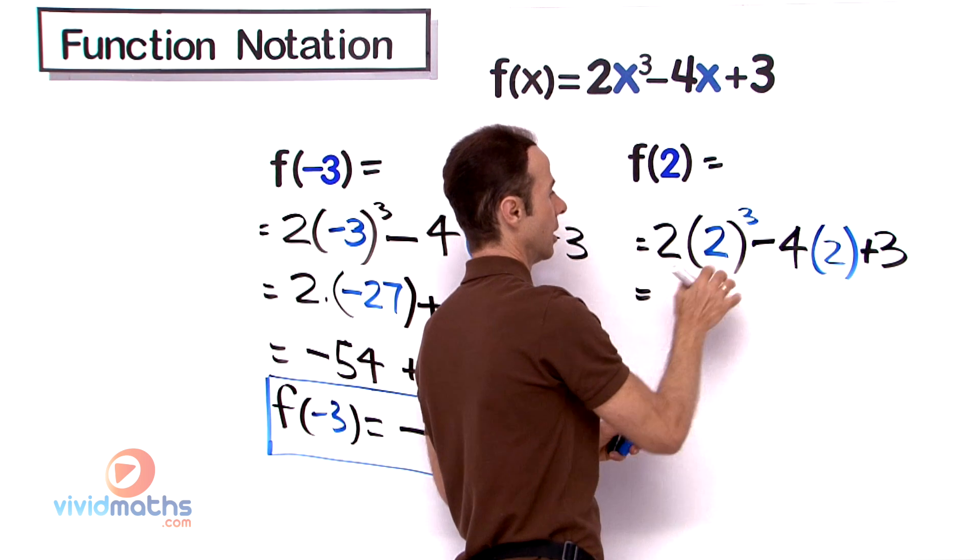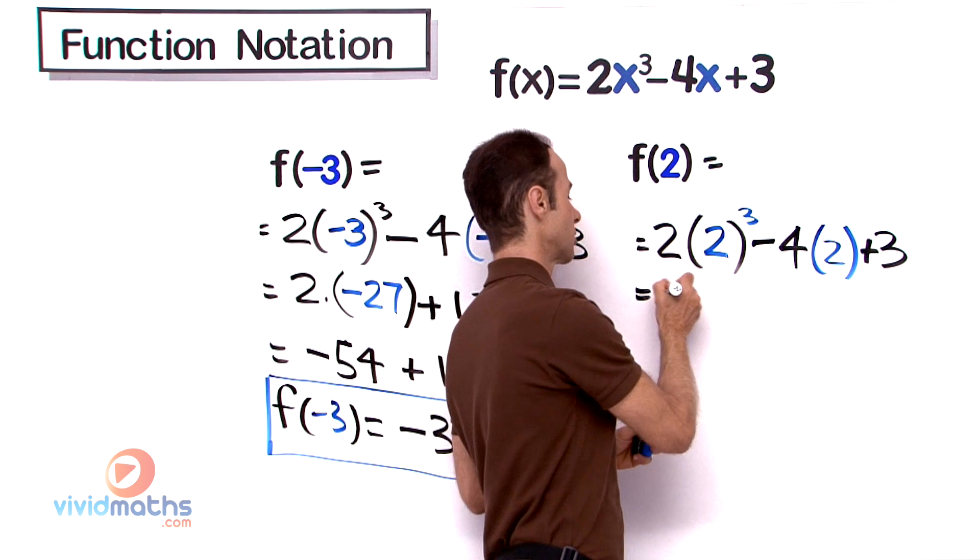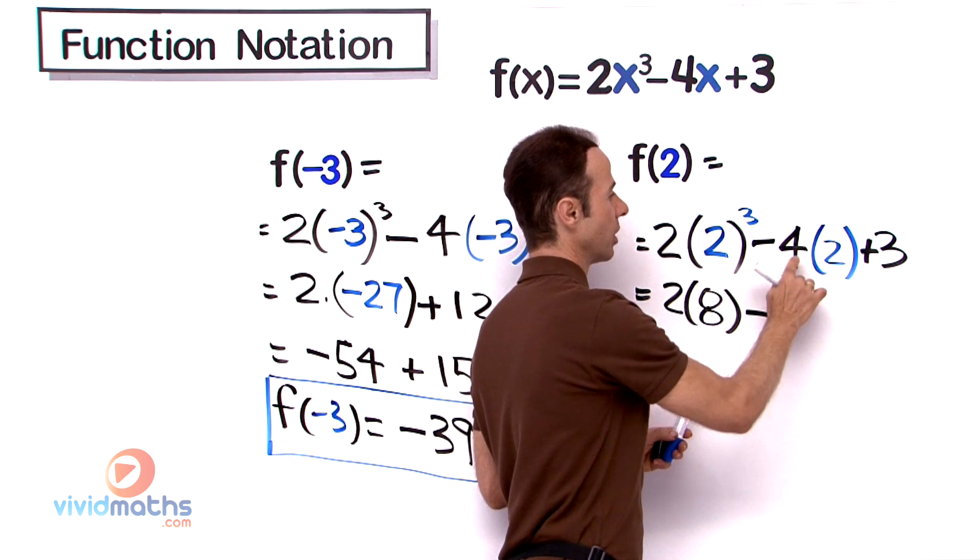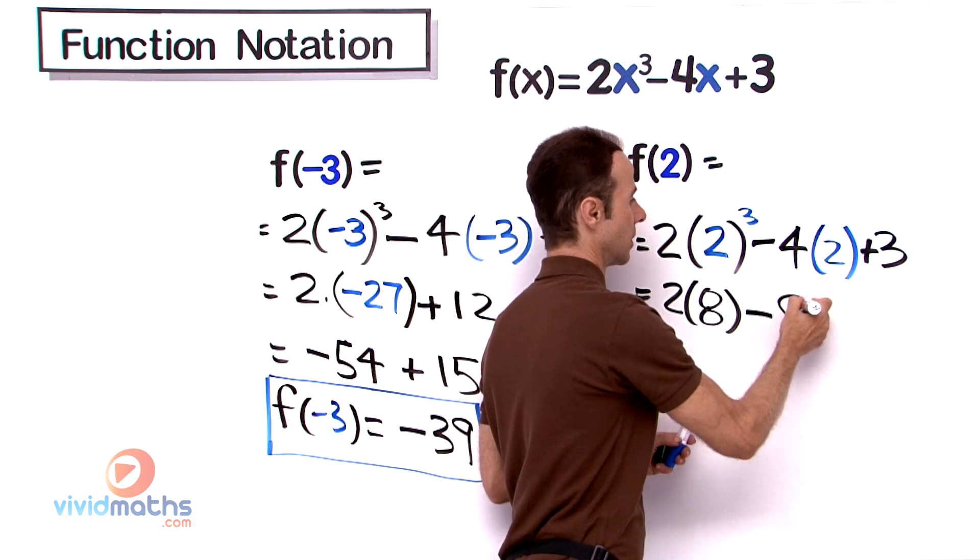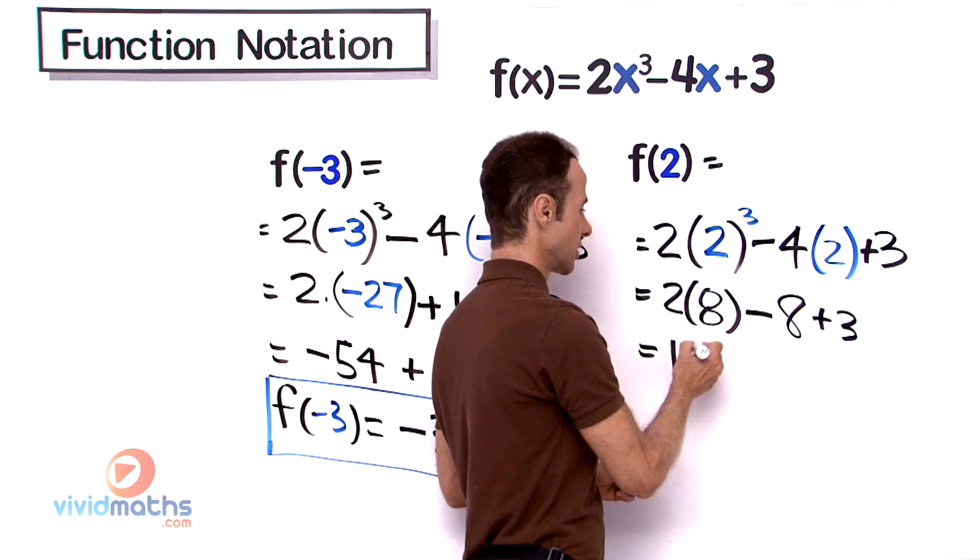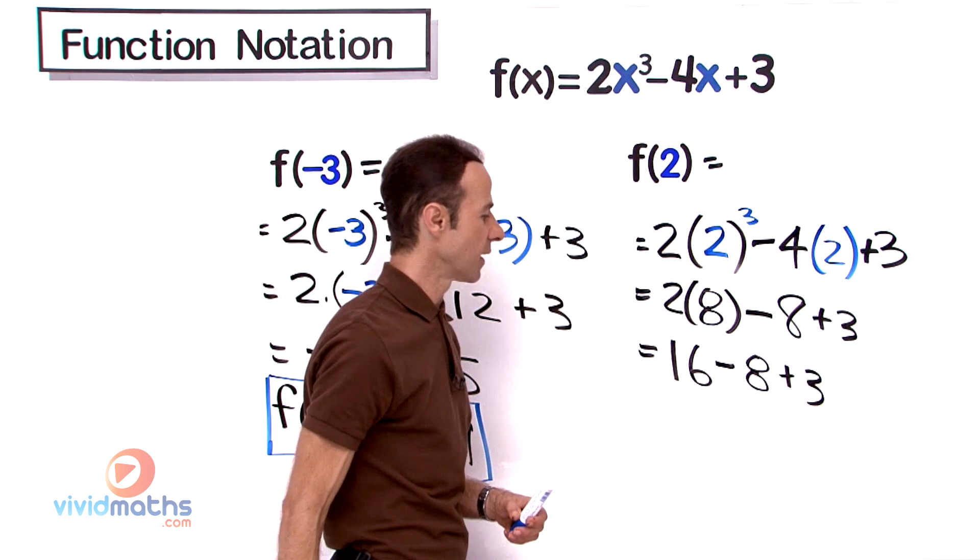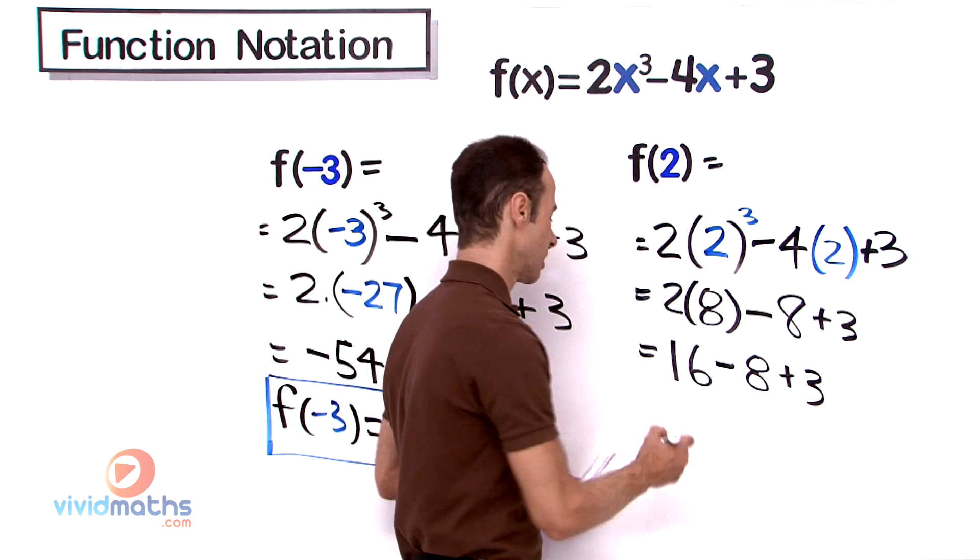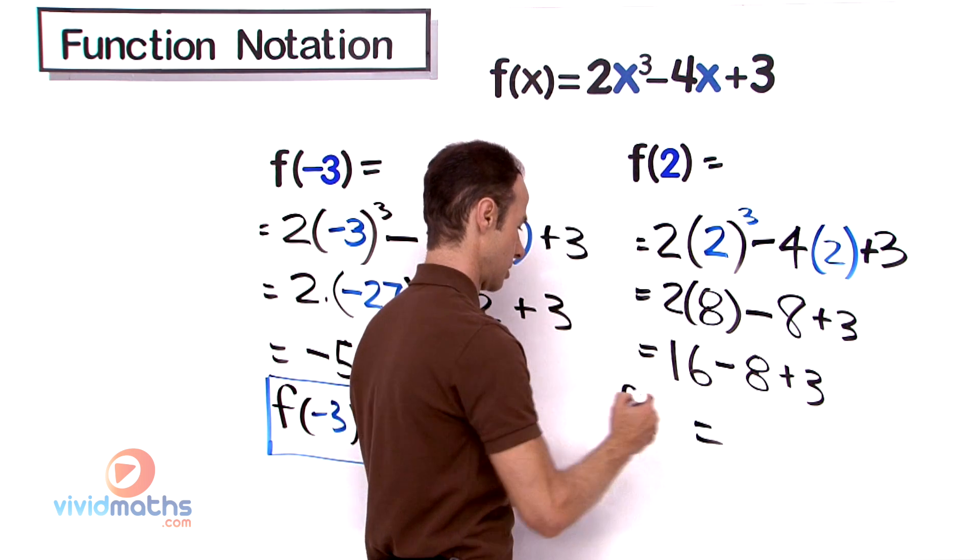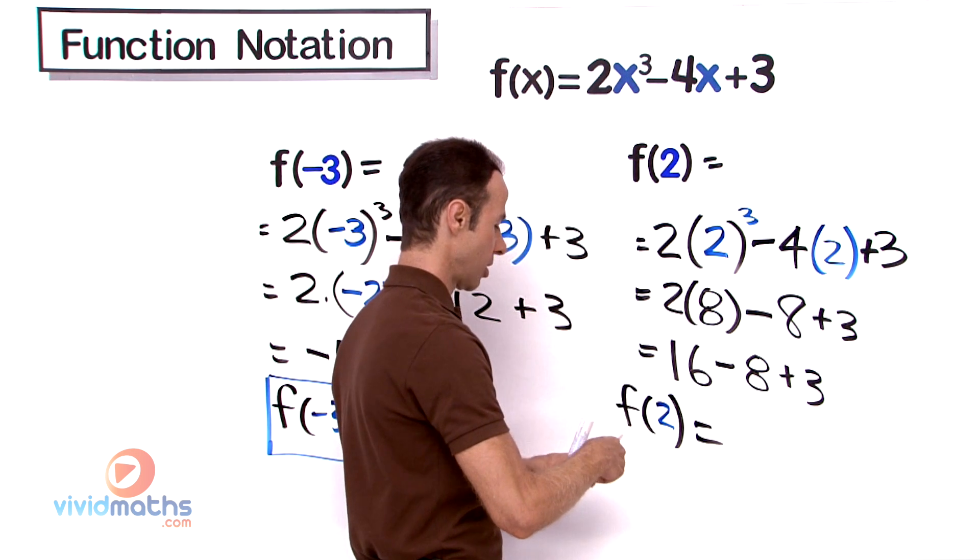So now we got 2 to the power of 3 is 8, so that is 2 times 8 take away 4 times 2 is 8 plus 3. 2 times 8 is 16 take away 8 plus 3. 16 minus 8 gives us 8, so 8 plus 3 equals 11. Function f(2) is 11, the grand total.